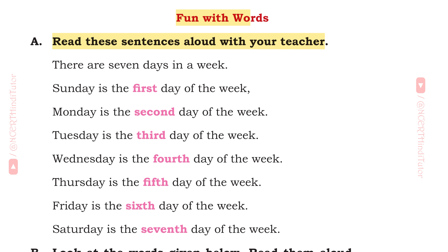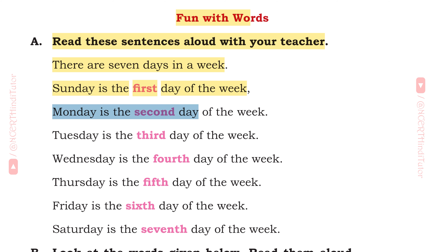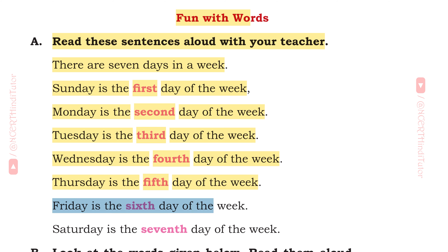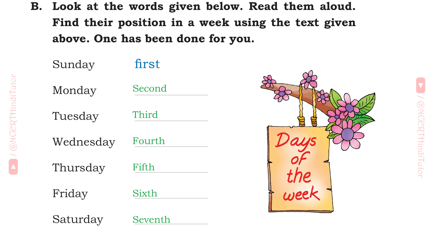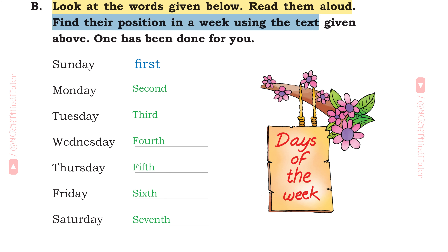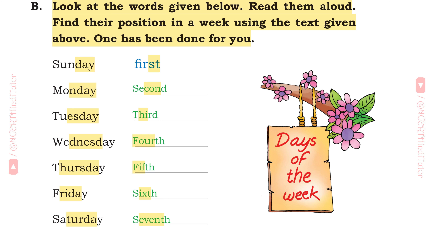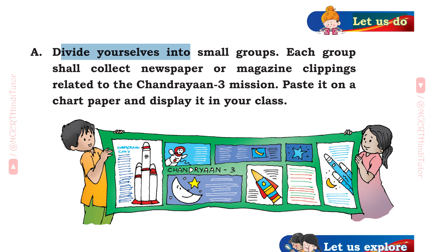Fun with words. A. Read the sentences aloud with your teacher. There are 7 days in a week. Sunday is the 1st day, Monday is the 2nd, Tuesday is the 3rd, Wednesday is the 4th, Thursday is the 5th, Friday is the 6th, and Saturday is the 7th day of the week. B. Find the position of each day in the week: Sunday 1st, Monday 2nd, Tuesday 3rd, Wednesday 4th, Thursday 5th, Friday 6th, Saturday 7th.